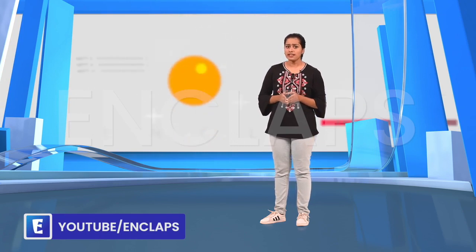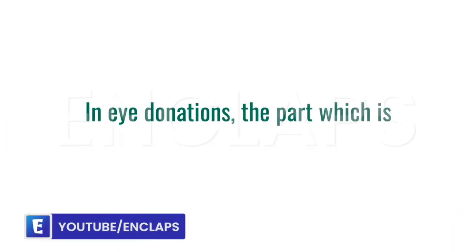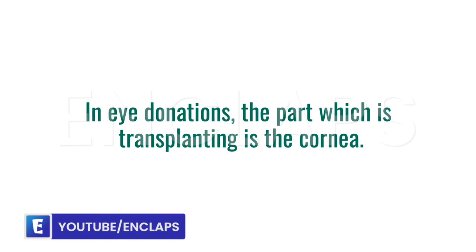The cornea is the transparent outer layer of the eye. If the cornea is damaged or loses its transparency, light cannot pass through it. This type of vision loss can be treated by transplanting or replacing the cornea. So, in eye donations, the part which is transplanted is the cornea.